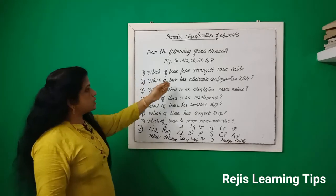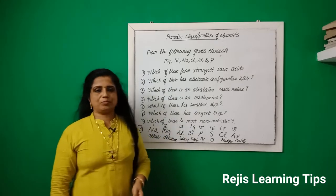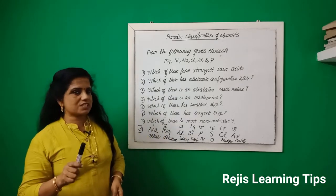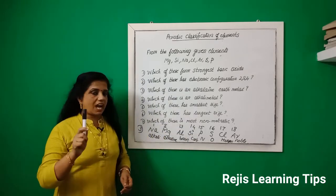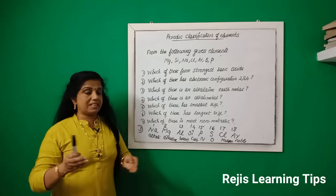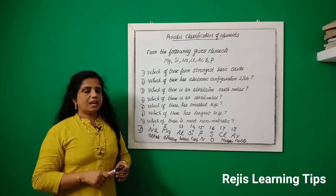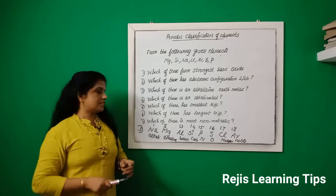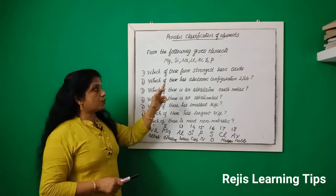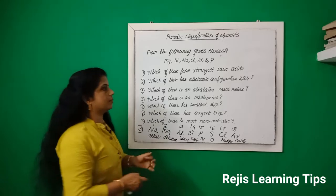Which of these forms the strongest basic oxides? The strongest basic oxides are mainly basic. Basic character is highest in alkali metals. Alkali metals here is sodium. So, which of these forms the strongest basic oxides? The answer is sodium.